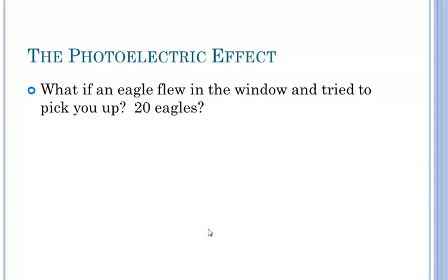An example I like to use: what if an eagle flew in the window and tried to pick you up? An eagle is not strong enough to pick up a human being. It could not throw you out of the classroom. What if 20 eagles flew in and tried? It doesn't matter because it's a one-on-one battle - photon versus electron. In this analogy, photons are the eagles and electrons are you. If there's not enough energy in each eagle to pick you up, it won't matter how many there are.